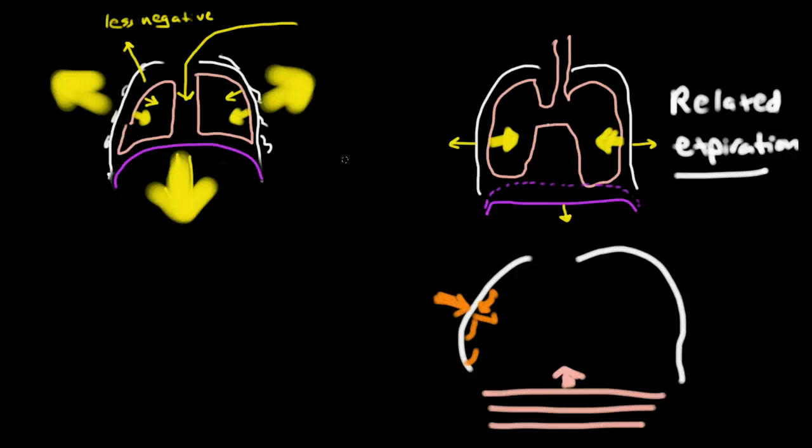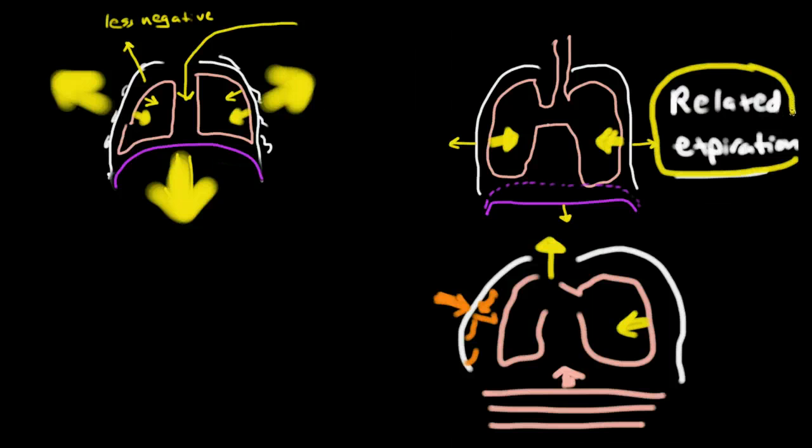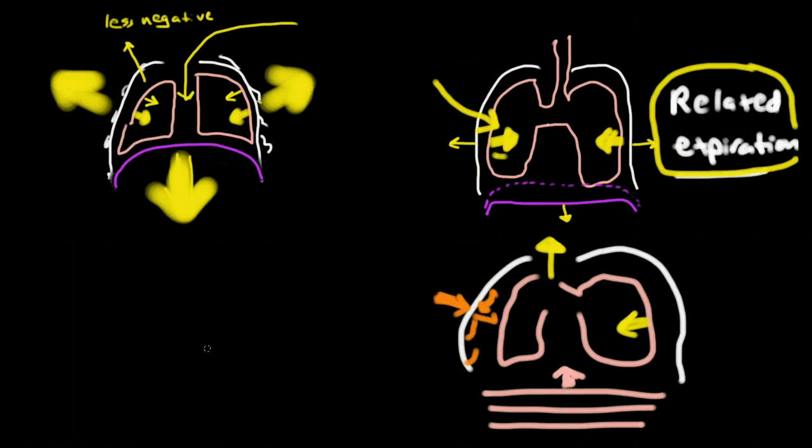And then we still have the recoil of the lungs, and so this just makes the, if you add all these pressures up, it's going to result in a higher pressure leaving the airways. So during, the major point I want you to get here is that during a normal expiration, the muscles in our diaphragm and chest wall are relaxed, and the recoil of our chest wall is actually working against the expiration. The expiration occurs only because of the negative inward pressure that's caused by the recoil of the lung because of the elastin fibers and the surface tension inside the alveoli.